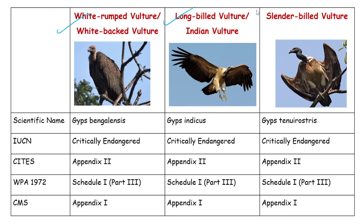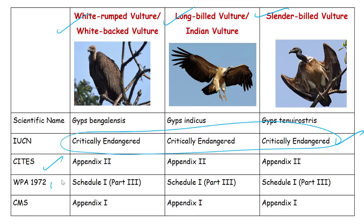Because of evidence of widespread and rapid population decline, all three vulture species are listed by IUCN as Critically Endangered. They are also listed under the same category in the Wildlife Protection Act (WPA) and the Convention on Migratory Species (CMS), meaning they enjoy the same level of threat assessment and conservation protection. The IUCN assessment indicates a high risk of global extinction of these species in the wild in the near future.